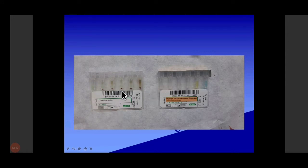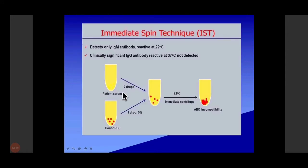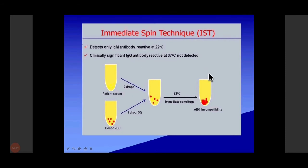This technique is available in our hospital. There is another technique called the immediate spin technique, but the temperature is 22 degrees Celsius. The disadvantage is that IgG antibodies will not be detected here.